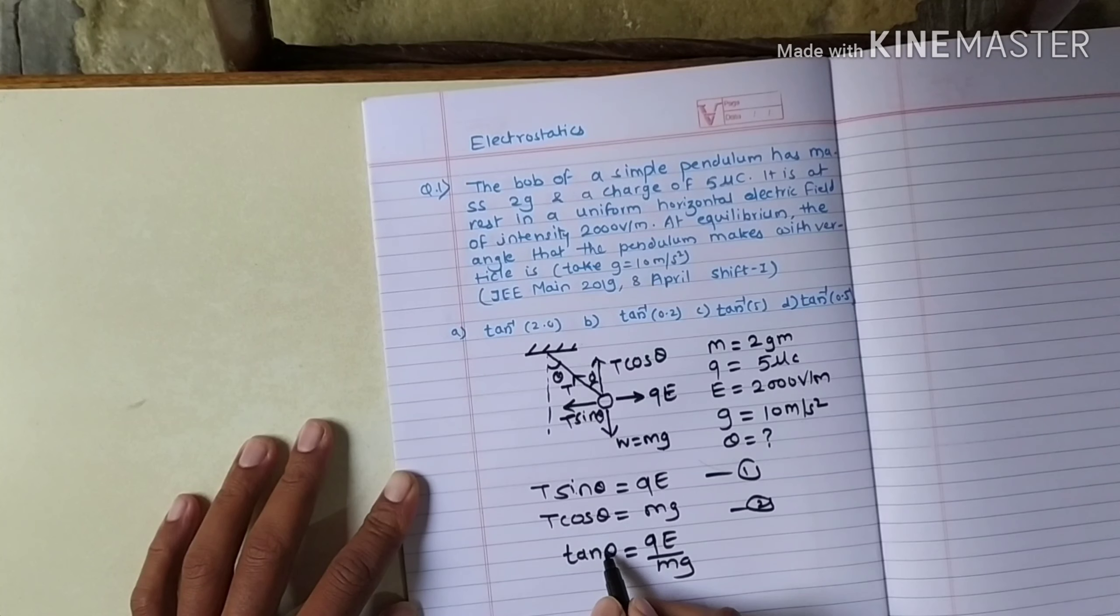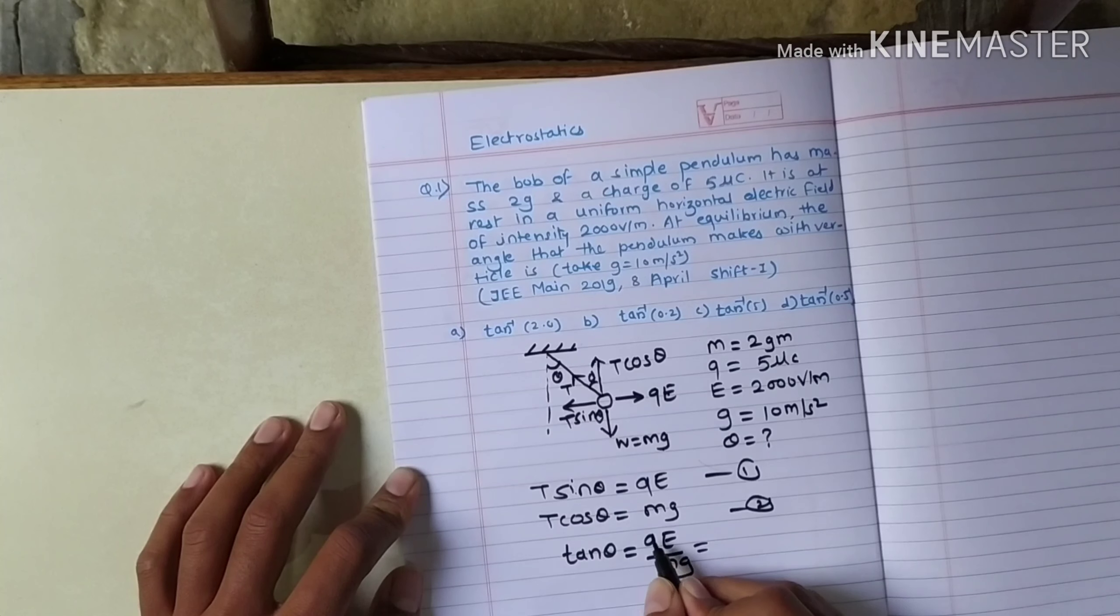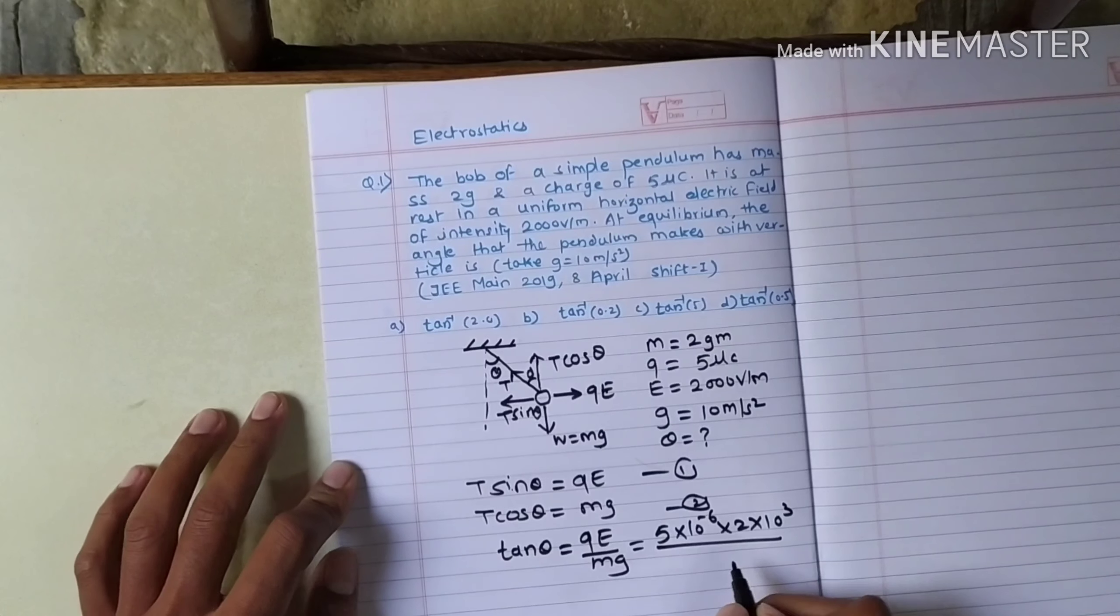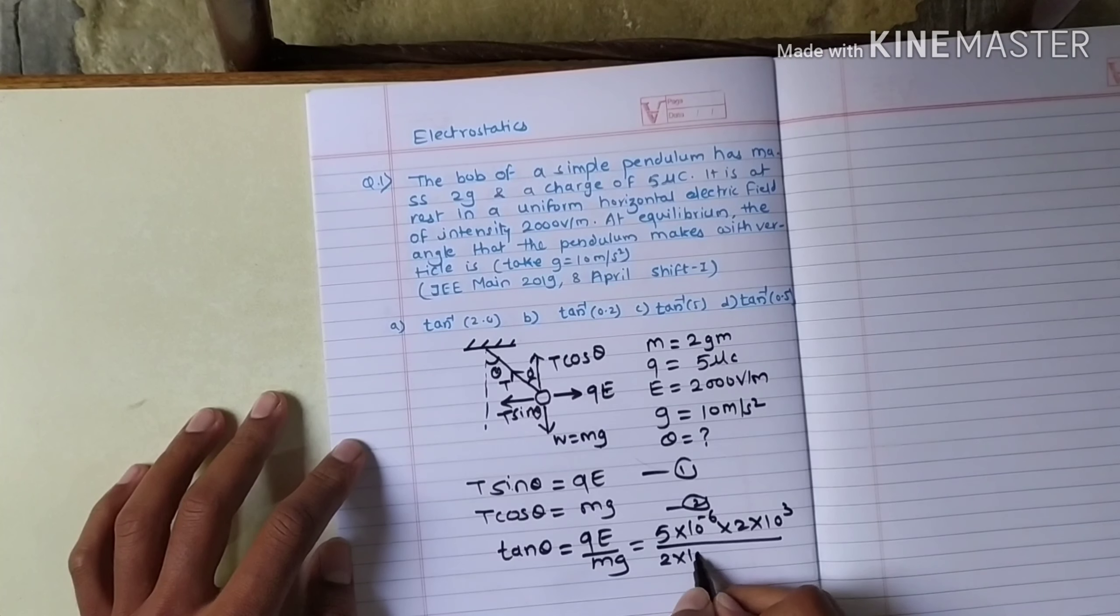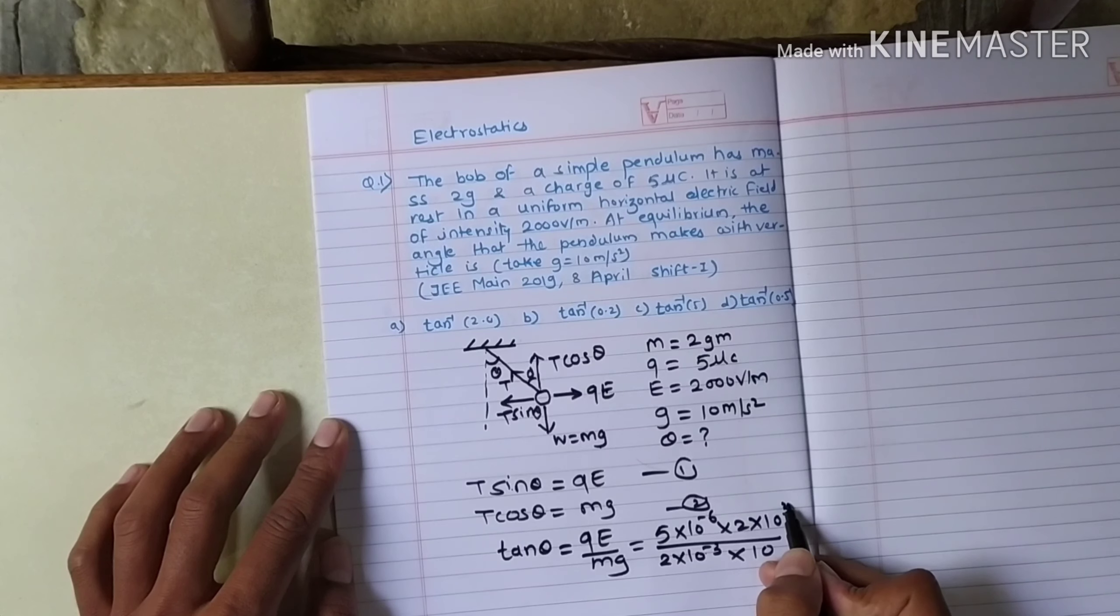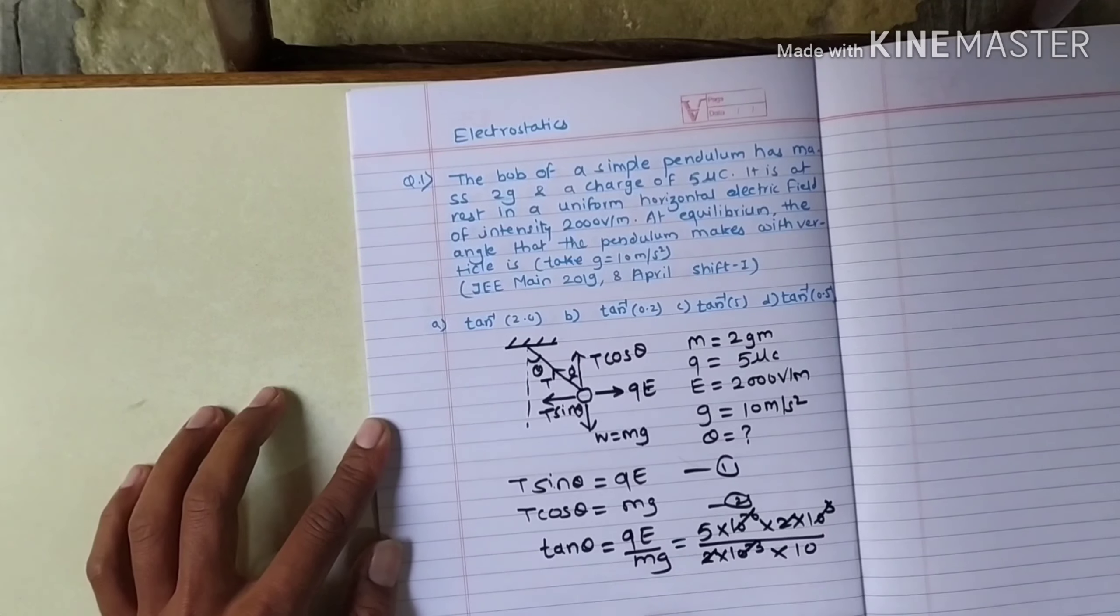Now we have to substitute values. We have to obtain tan theta. The option is tan inverse. Let us substitute the value. The charge over here is 5 microcoulombs, that is 5 into 10 raised to minus 6. Electric field is 2 into 10 raised to 3. The mass is given as 2 grams, so 2 into 10 raised to minus 3, multiplied by g which is 10. This 10 raised to 3 goes up, 10 raised to plus 6 minus 6 will get cancelled. 2, 2 will get cancelled. 5 upon 10 remains. So that means tan theta is equal to 1 by 2, that is equal to 0.5.